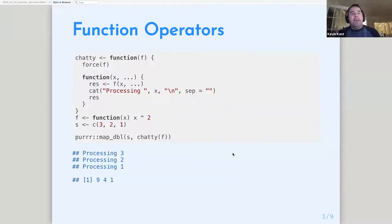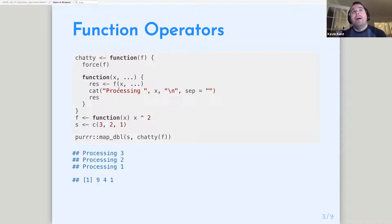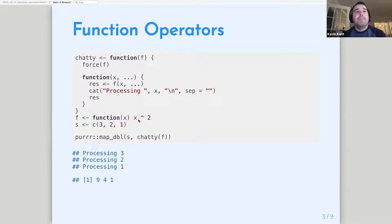So this is just the first example Hadley had in the book of function operators. In this case, this function is taking function F as input, forcing its evaluation, and then getting the first X argument and outputting — so it's modifying that function to output 'processing 3', 'processing 2', whatever the X argument is — in addition to actually computing the X squared call. So: taking a function as an argument, doing something with it, and then returning a function as output.